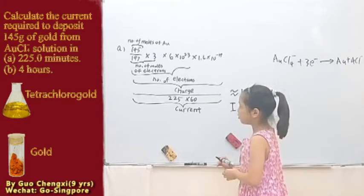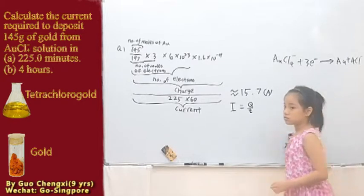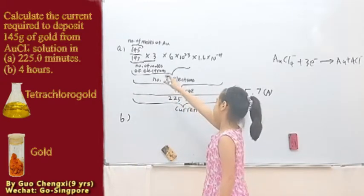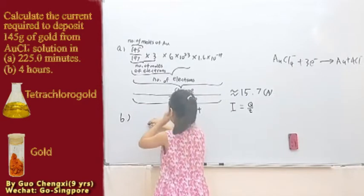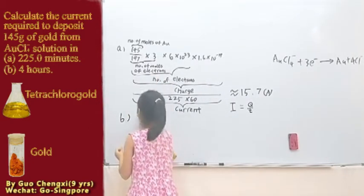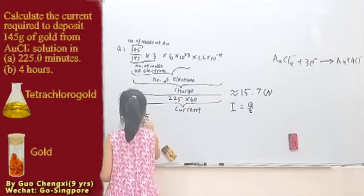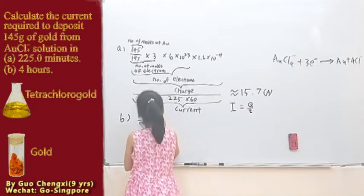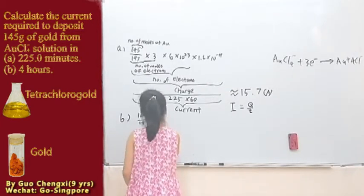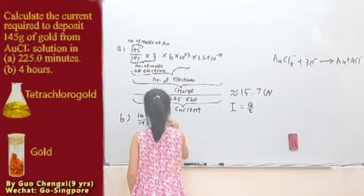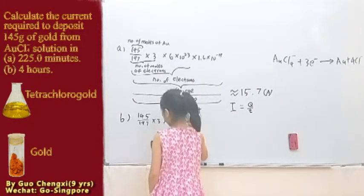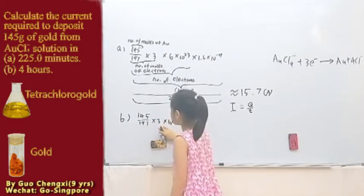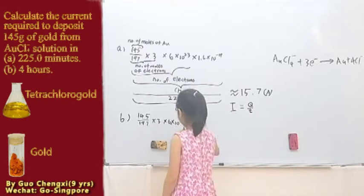For this part, let's do the second part. So I'll just erase. I'll explain while I may not have space. For this first part, it's still 145 over 197. Because the only difference is the current. Again, Avogadro's number. This is number of moles of gold, then number of moles of electrons, then number of electrons.